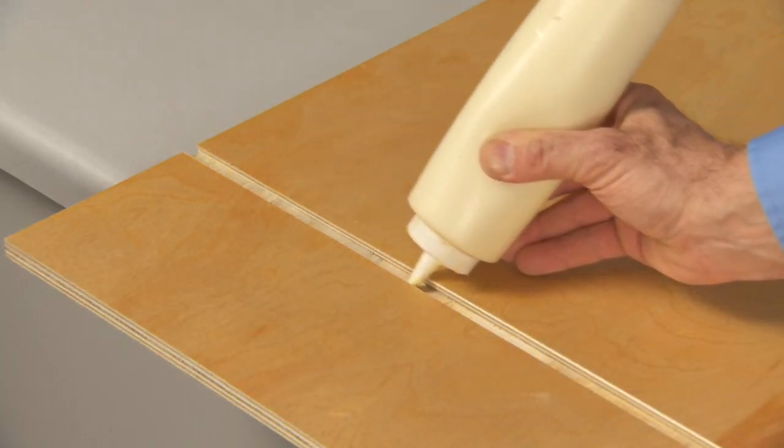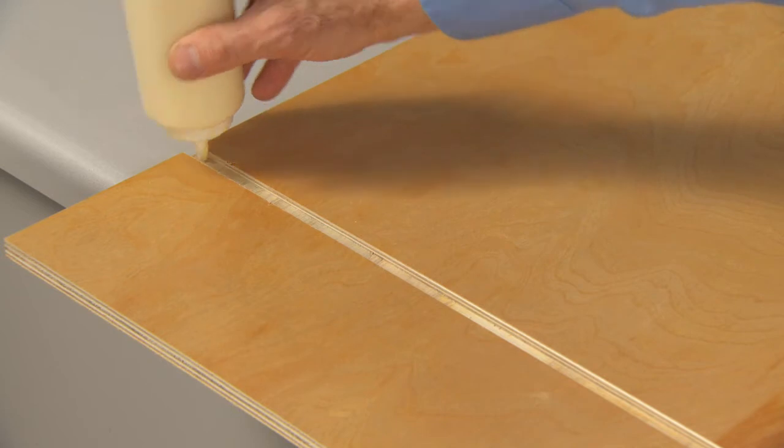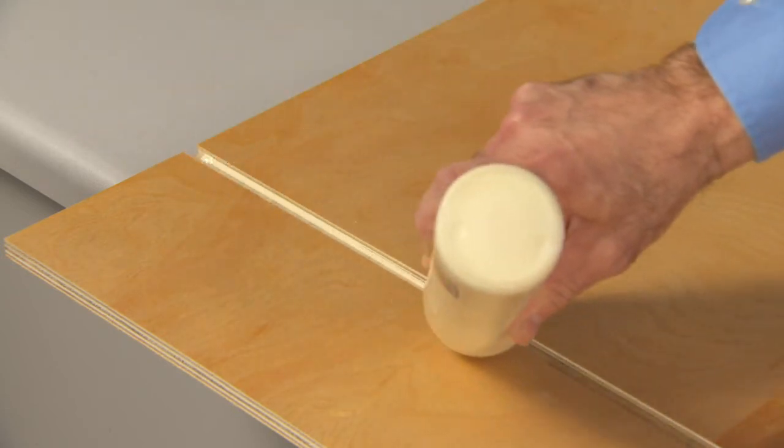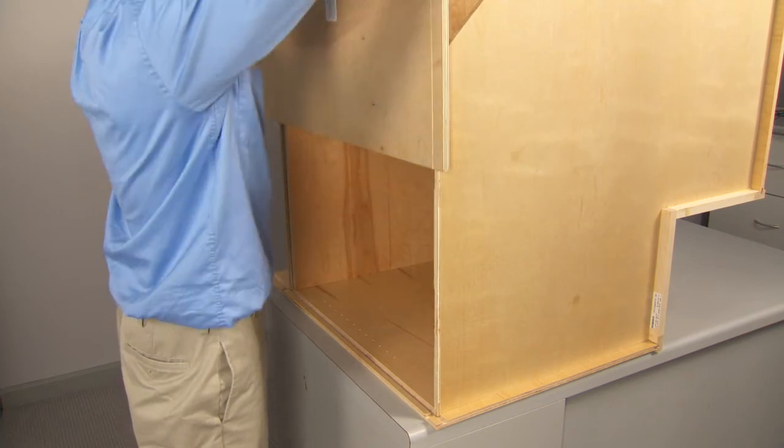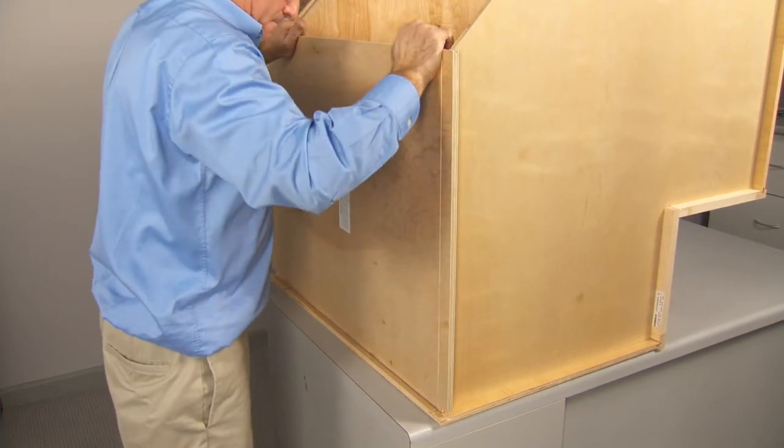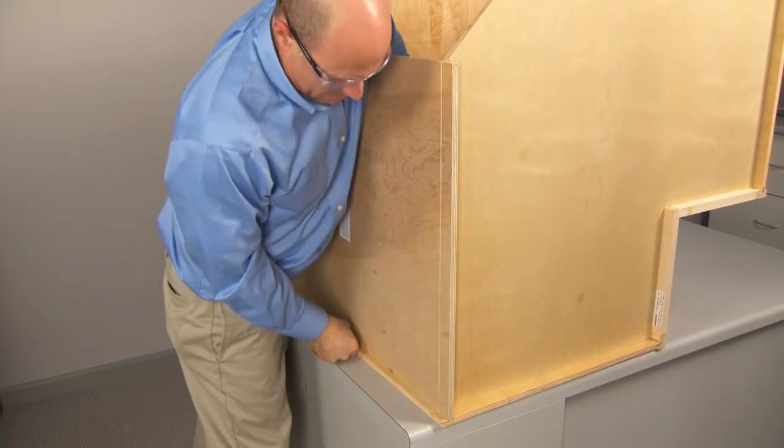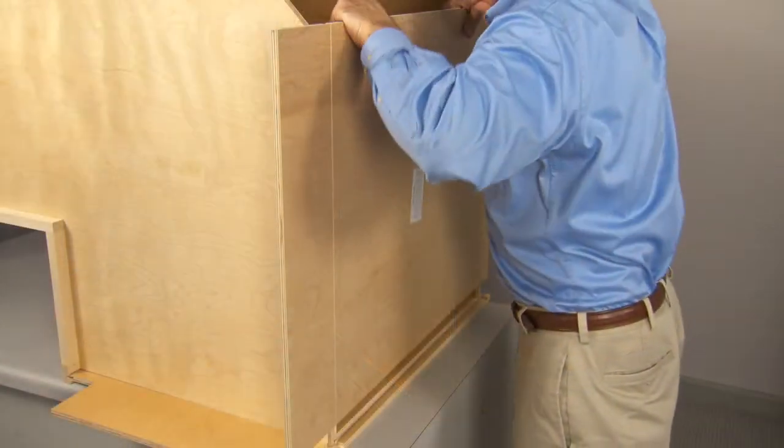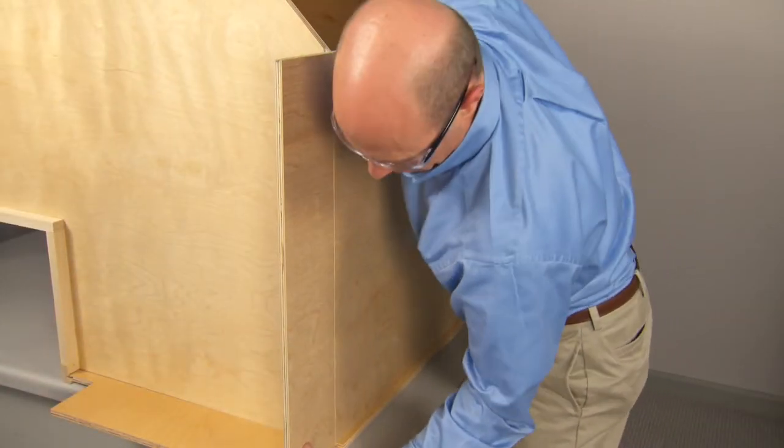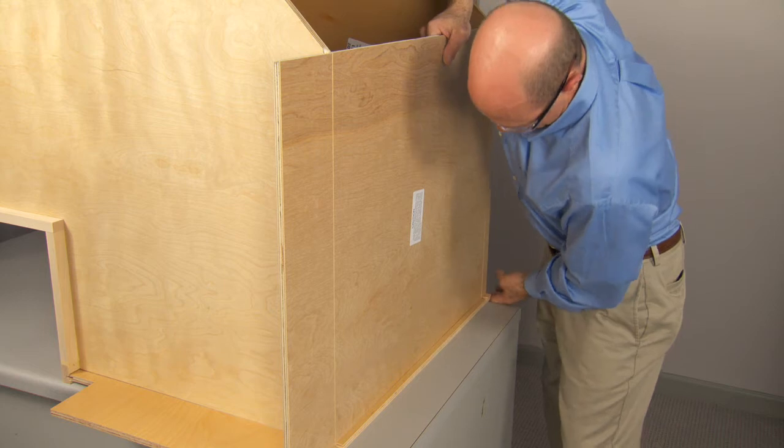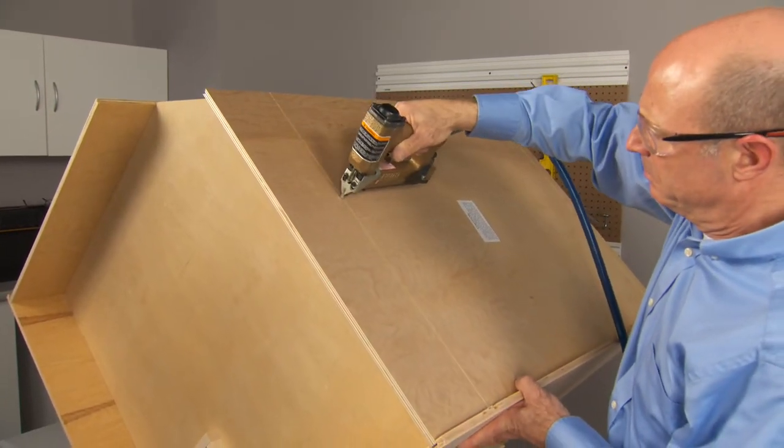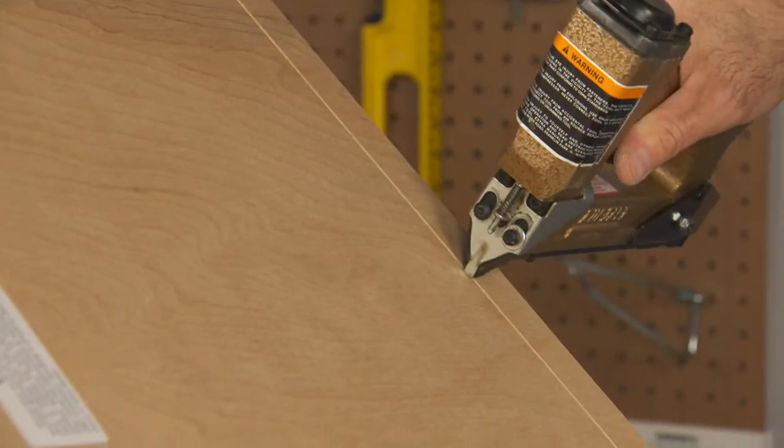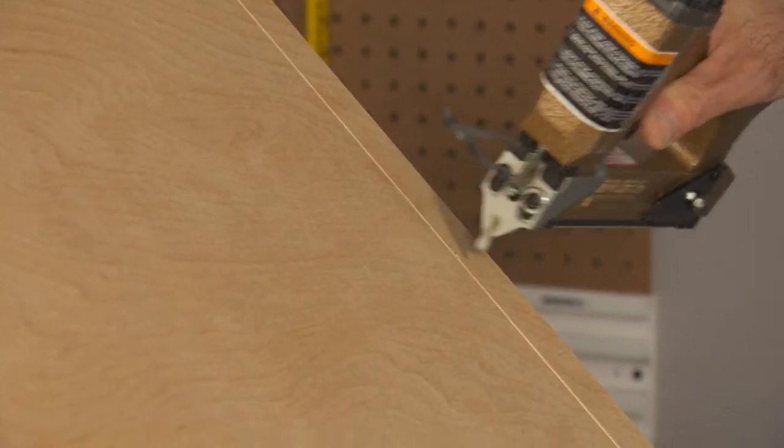Apply glue to the female dovetails of the backs and the back rabbet of the sides. Slide each back panel onto the male dovetails of the top and bottom. Following the scribe lines, fasten the backs to the top and bottom. Place the pins or staples no less than every 3 inches.